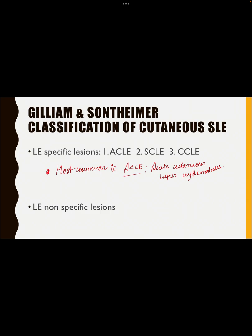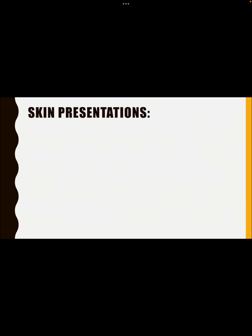You have to remember the classification by Gilliam of cutaneous SLE: two lesion types — LE specific and LE non-specific. Among LE specific, there are three types: acute, subacute, and chronic. The most common is acute cutaneous lupus erythematosus. Now, coming to skin presentations — ACLE, then SCLE subacute, then chronic.